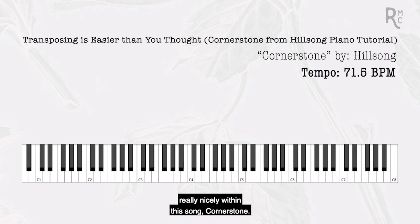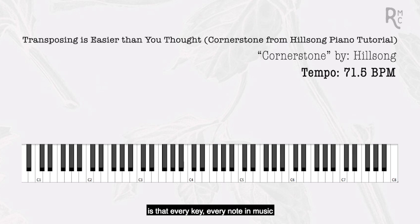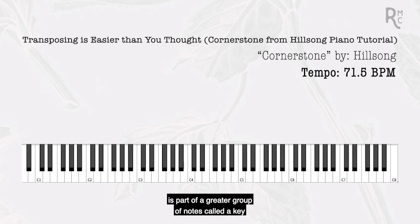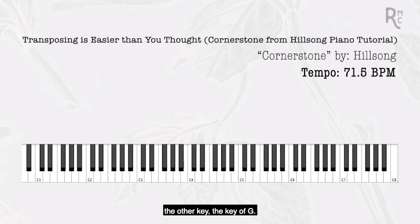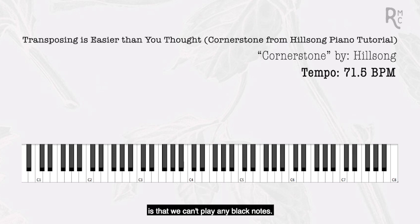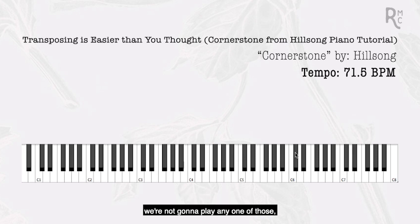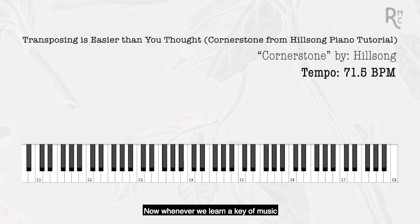Every note in music is part of a greater group of notes called a key — a key is just a group of notes that sound really good together. The key of C has one rule: we can't play any black notes. Looking at this piano roll, you see the black notes — we're going to stay away from those and just stick with the white notes.